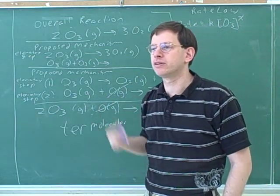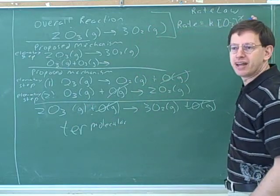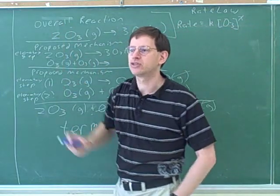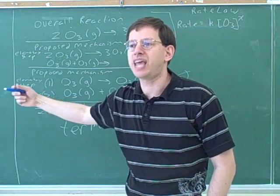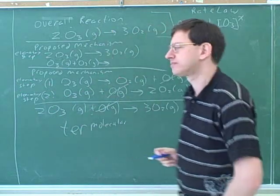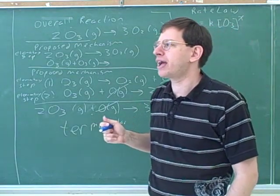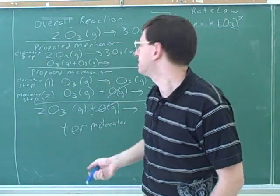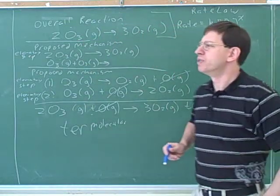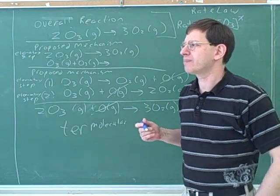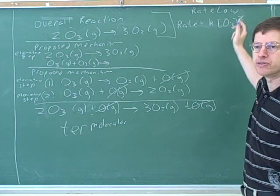You learned on Friday how to figure out what x is from experimental data, and if we could just get it from the balanced equation, we wouldn't need that. Generally, you get the exponent from the experimental data — knowing the balanced equation is not enough. That makes sense because the rate depends on how the reaction actually happened, and the overall equation doesn't tell us how the reaction actually happened.